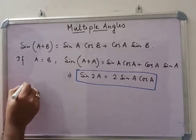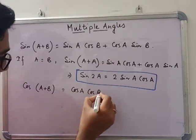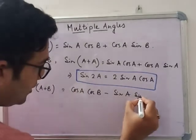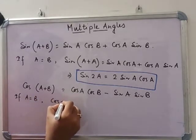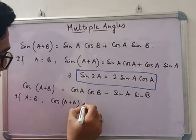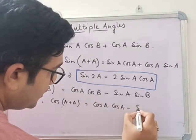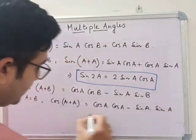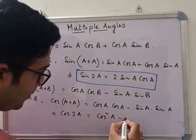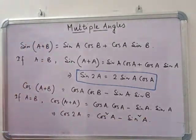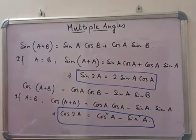Similarly, from the cosine formula, we know cos(A + B) = cos A cos B − sin A sin B. If A equals B, then cos(A + A) = cos A · cos A − sin A · sin A, which gives us cos 2A = cos²A − sin²A.